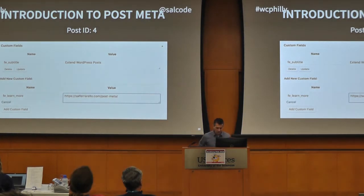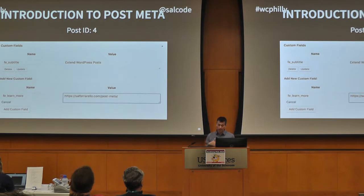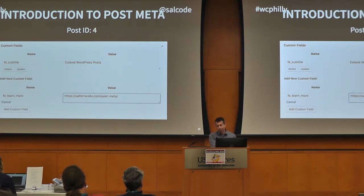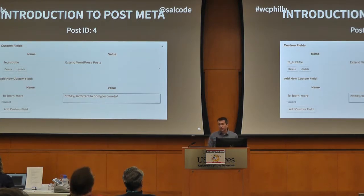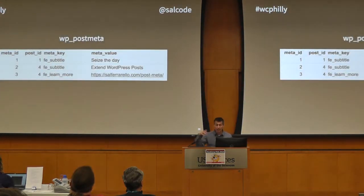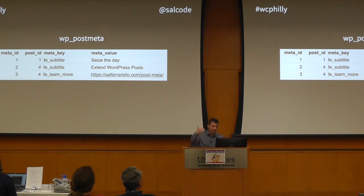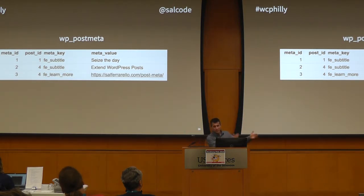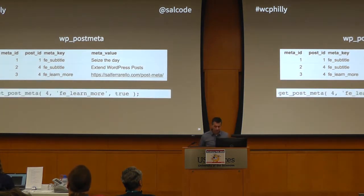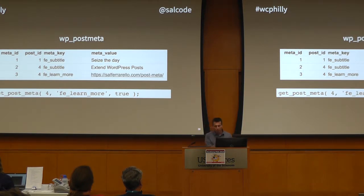Let's take a look at more fun we can have with custom fields. We can add a second one — we're not limited to one. I'm adding fe_learn_more, with a URL as the value — actually a URL to my companion blog post to this talk. If I take a look at the wp_postmeta table after I save this, I've got a new row: meta ID of three, post ID of four, the meta key is fe_learn_more, and the meta value is that URL. I can pull it back out using get_post_meta — give it the ID of four, the meta key fe_learn_more, third value always true — and that will pull that URL back out.